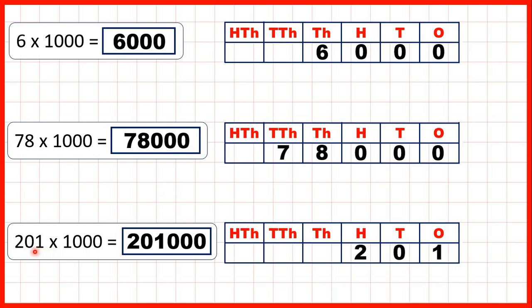And finally we had 201. If we move the digits three squares to the left then we've multiplied by a thousand. But to show the place values that these digits are now in we need to write zeros in our empty squares to give us our answer 201,000.